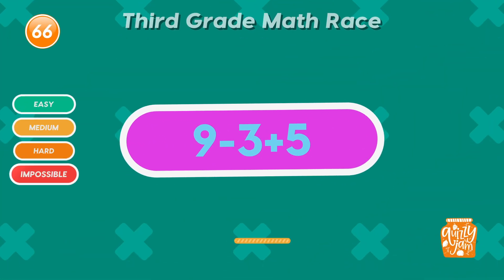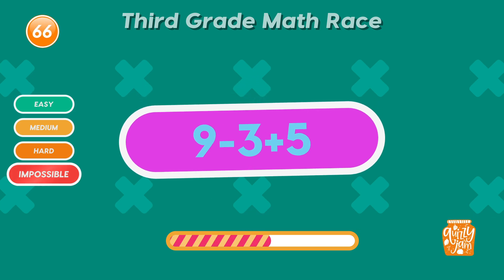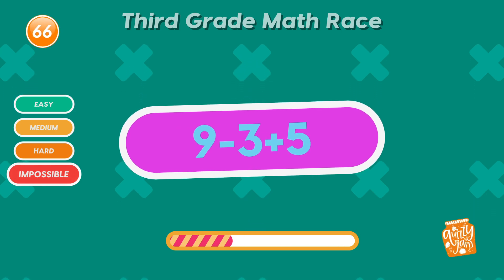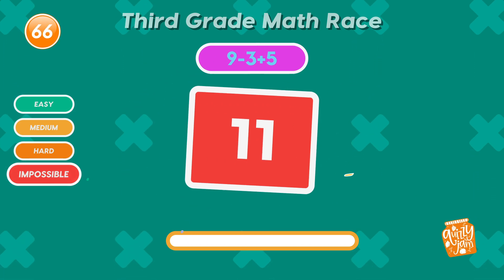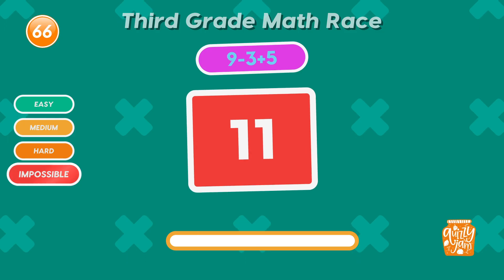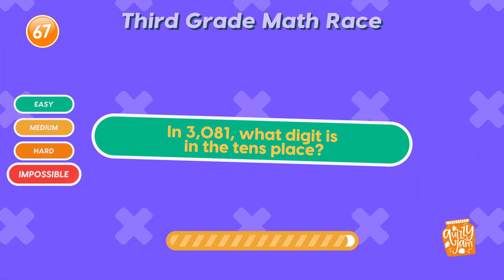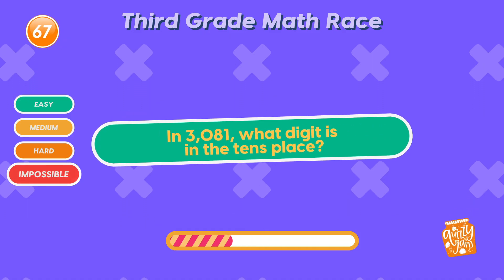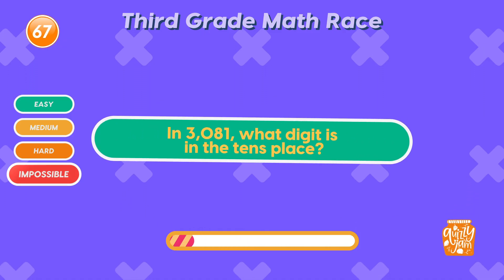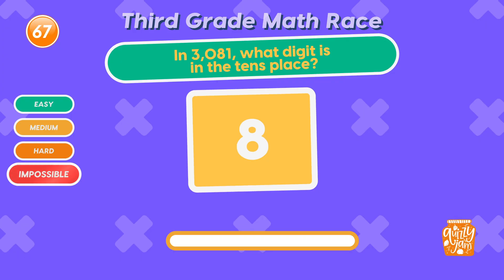What is 9 minus 3 plus 5? 11! Speed and smarts! In 3,081, what digit is in the tens place? 8! Place value perfection!